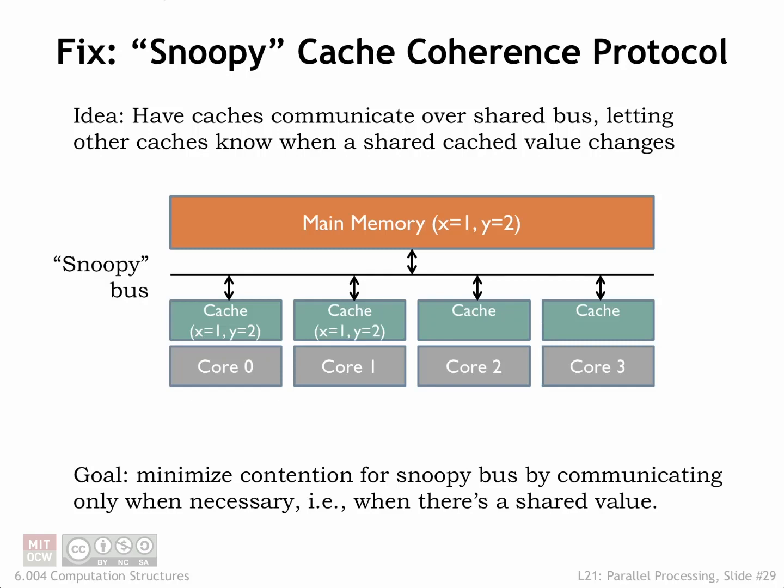The problem with our simple multicore system is that there is no communication when the value of a shared variable is changed. The fix is to provide the necessary communications over a shared bus that's watched by all the caches. A cache can then snoop on what's happening in other caches and then update its local state to be consistent. The required communications protocol is called a cache coherence protocol.